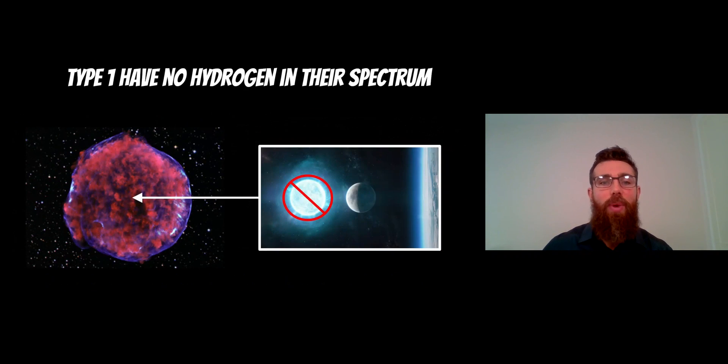Now if you were to take the spectrum of a type 1a, or type 1 in general actually, you generally wouldn't see any hydrogen in their spectrum. So that's a key indicator that it might be type 1. They don't have hydrogen in their spectrum.